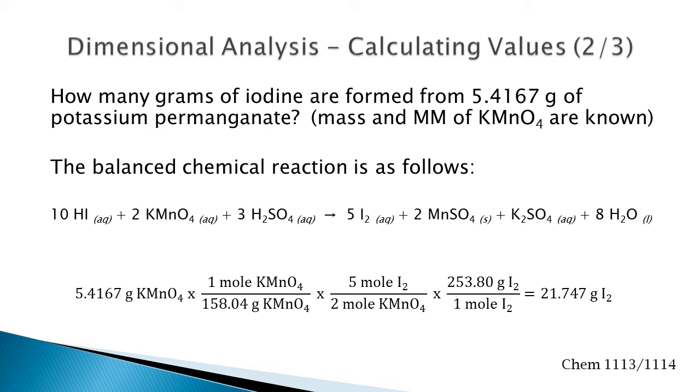Get that into moles. Then use the balanced chemical reaction: 5 moles of iodine for every 2 moles of potassium permanganate. To get grams of iodine, multiply by the molar mass of iodine.